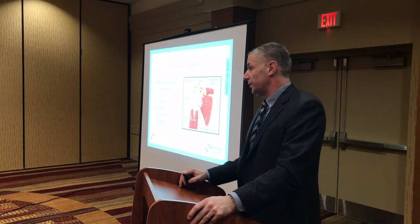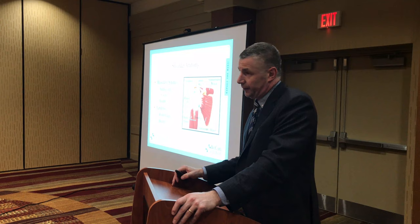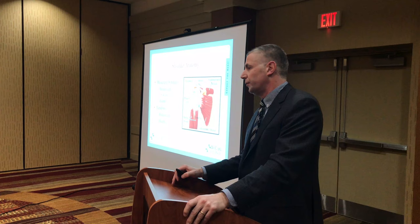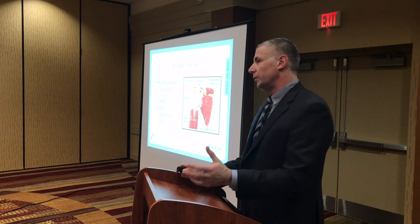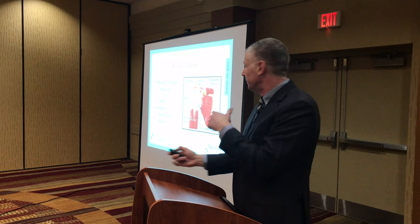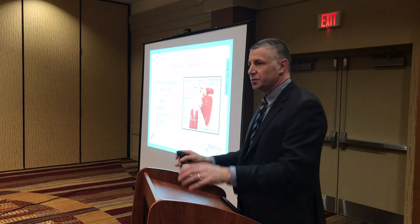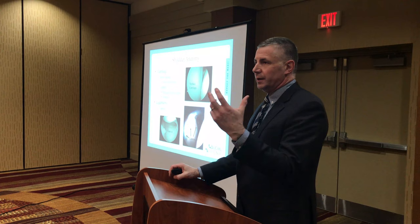There are 18 muscles that originate or attach on the shoulder blade — that's how complex it is. We'll focus on two major tendon groups. The rotator cuff consists of four muscles: front, top, and back. The other muscle group is the biceps — your biceps muscle actually has a tendon that attaches deep inside the shoulder. These are the terms we'll use throughout our discussion.